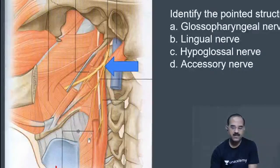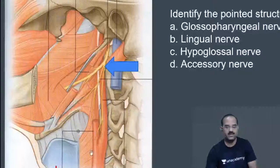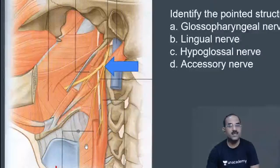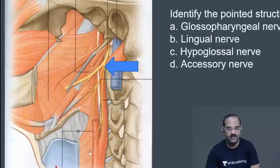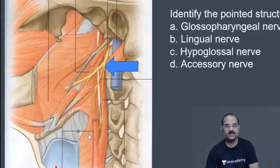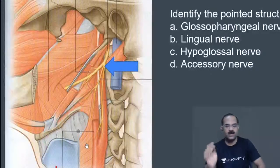The glossopharyngeal nerve travels with the stylopharyngeus muscle, which begins from the styloid process. Together they pass between the superior and middle constrictor muscles of the pharynx. This is the hyoid bone, that is the middle constrictor, and the superior constrictor is above. The inferior constrictor begins from the thyroid cartilage — specifically the thyropharyngeus part.